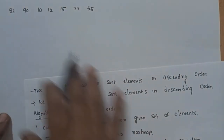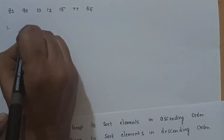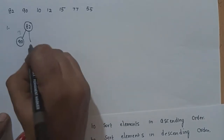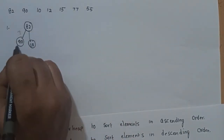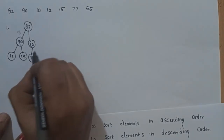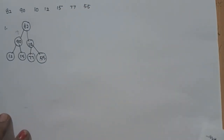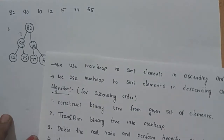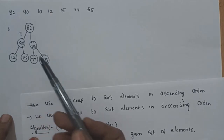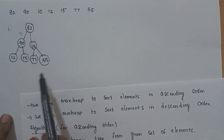For example, the first element is the root. The next element, 90, is the left child of the root node. The next element, 10, is the right child of the root node. The next element, 12, is the left child of 90. The next element, 15, is the right child of 90. The next element, 77, is the left child of 10, and 55 is the right child of 10. This constructs a complete binary tree, filling left to right at each level.